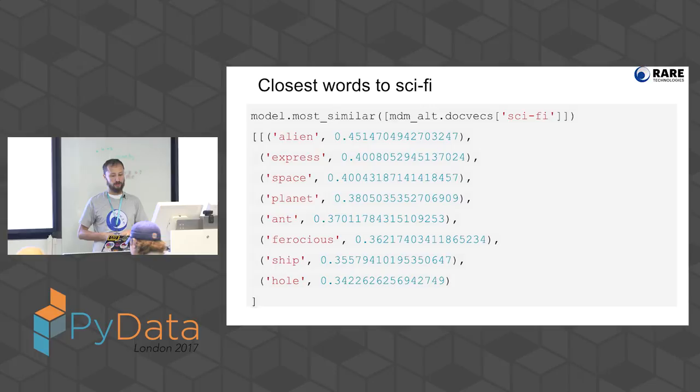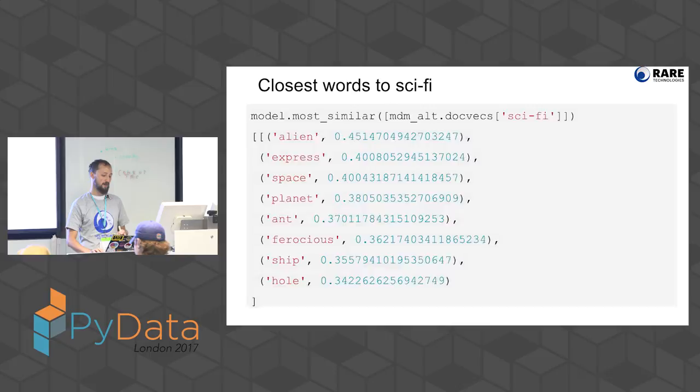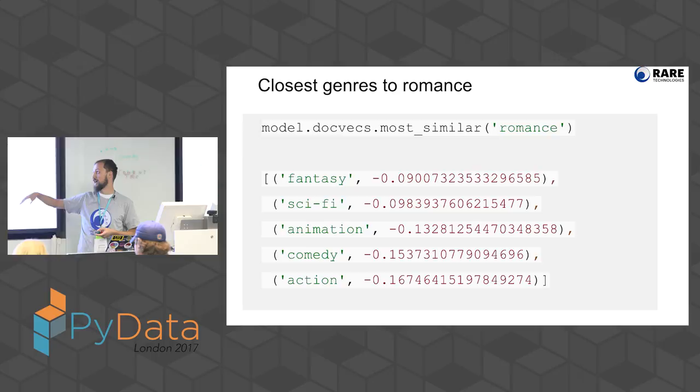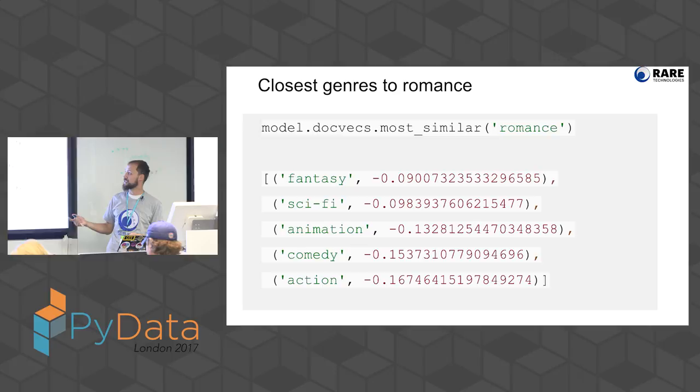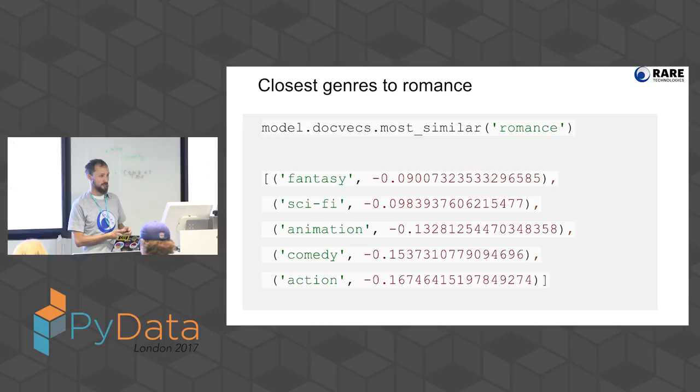I can see which genres are closest to each other. The closest words to romance are things like 'millionaire,' 'local,' 'hair' — this is what defines the romantic genre. I'm looking at the red vectors only, ignoring the green words.